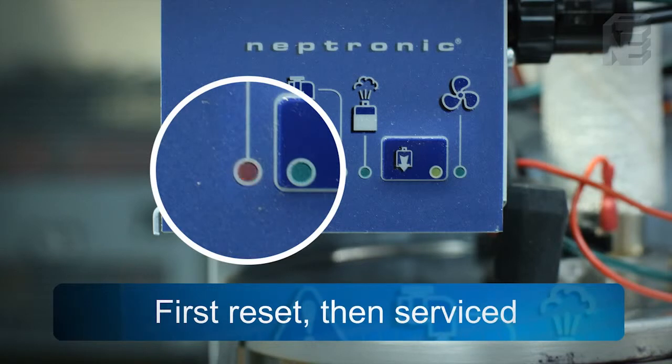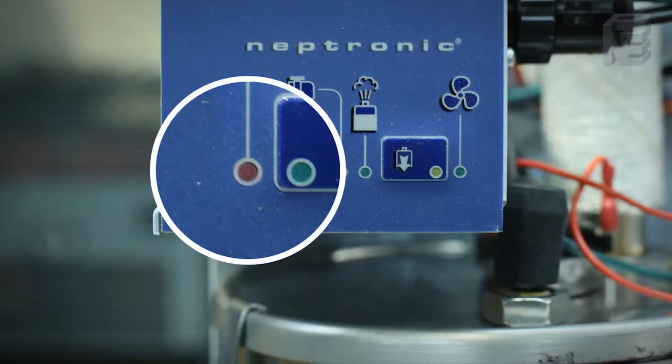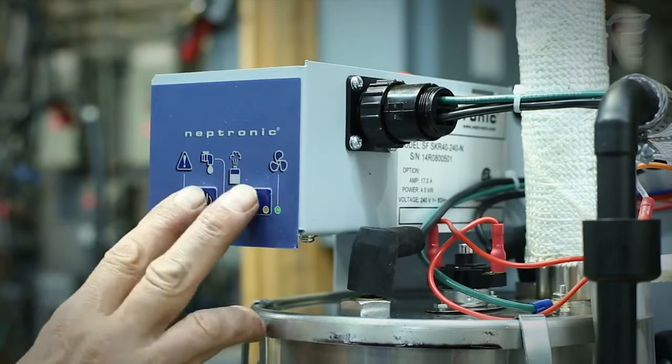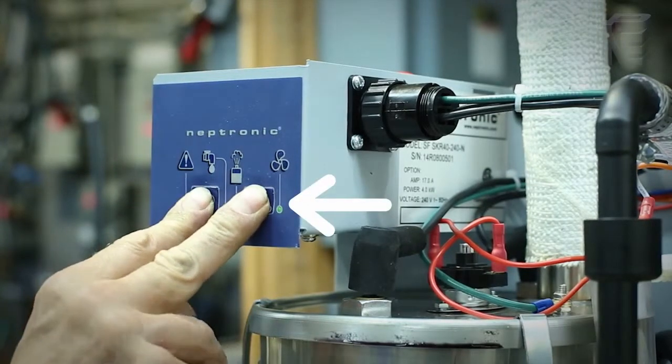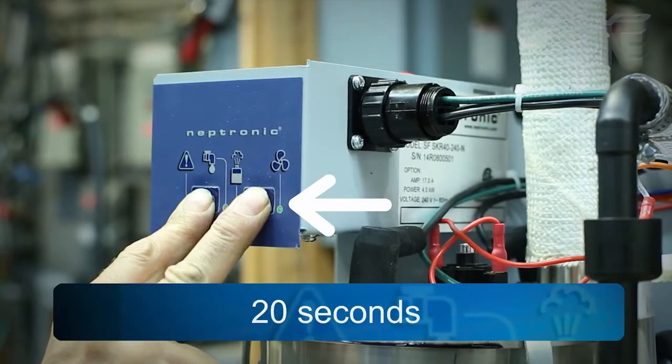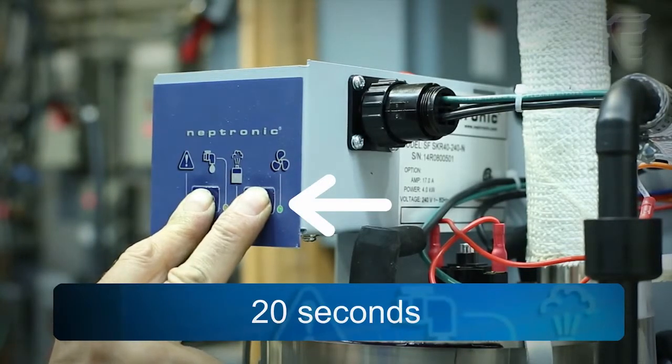Once reset, it will go through another 1,500 hour period of operation. To reset the time factor to zero hours operation, press both the power push button and the drain push button simultaneously for about 20 seconds, and this will zero the hours and get rid of the red check light.